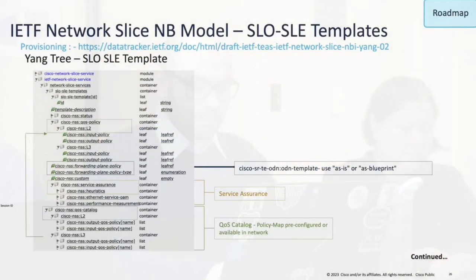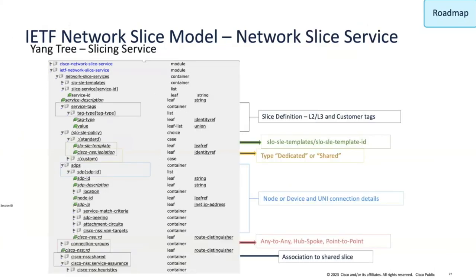The IETF slice has defined a network model for slicing that specifies what components should go in a template — the SLO template you want to define. What is the Yang model for layer three QoS, layer two QoS, a catalog of QoS policies, and forwarding plane policies? The forwarding plane policies here are about ODN templates — how you can reuse ODN templates as-is or as a blueprint. The slicing definition creates those slices out of the catalog: use the forwarding template, use the QoS assurance capabilities in the catalog, and bind it to your SDPs.